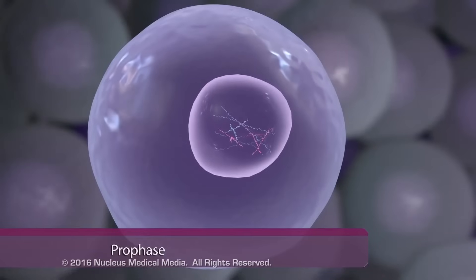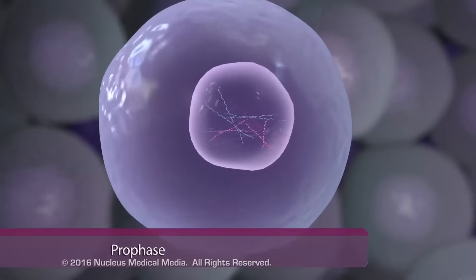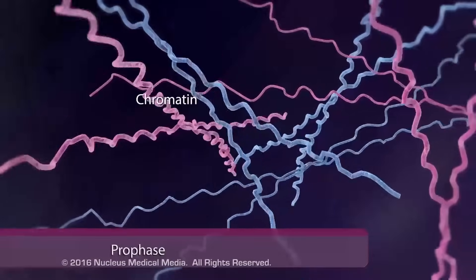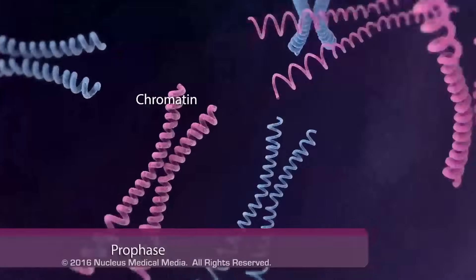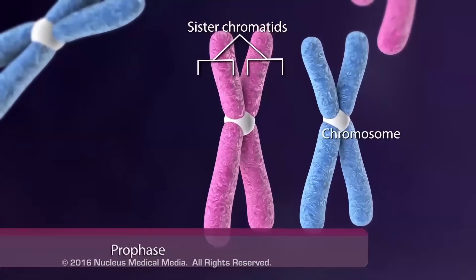After DNA replication, mitosis begins with prophase, during which chromatin condenses into chromosomes, each consisting of two identical sister chromatids.